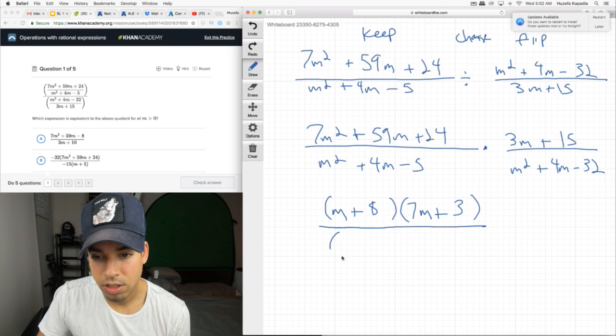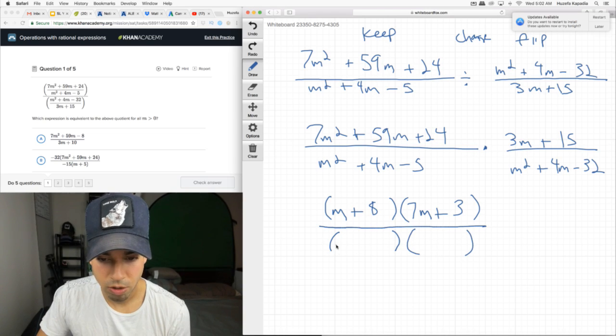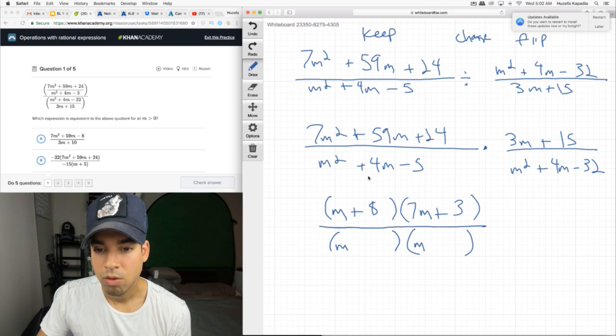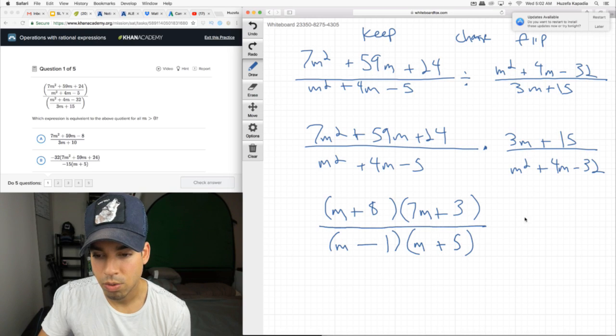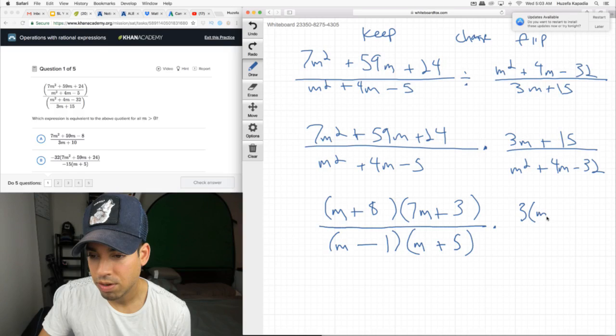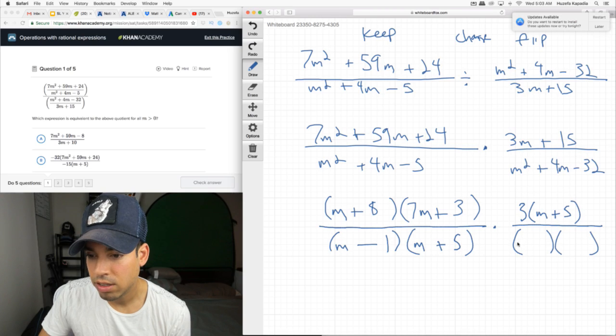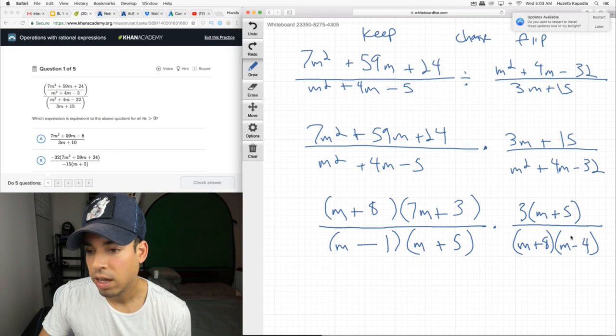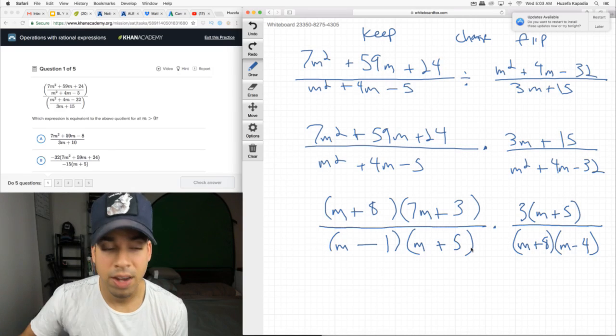Now, let's do this guy. This one's easier to factor. We start with the M here and here. What multiplies to negative 5 and adds to 4? That is plus 5 and minus 1 times. I'm going to pull out a 3 out of this that we can factor. 3 times the M plus 5. And lastly, down here, what multiplies to negative 32 and adds to 4? That is M plus 8 M minus 4. 8 times negative 4, negative 32. 8 plus negative 4, positive 4.